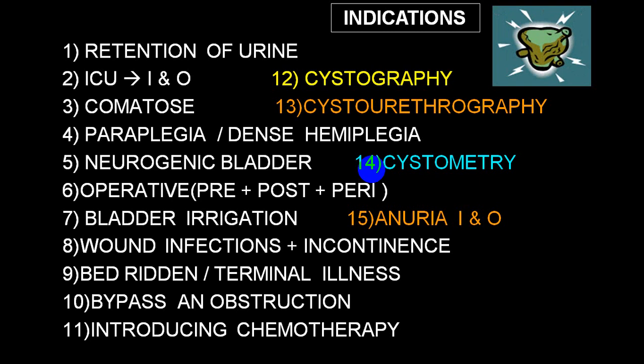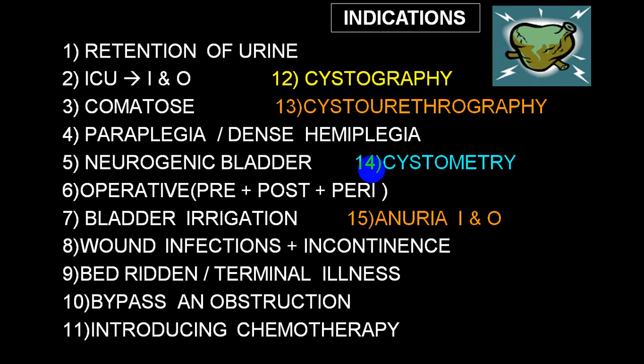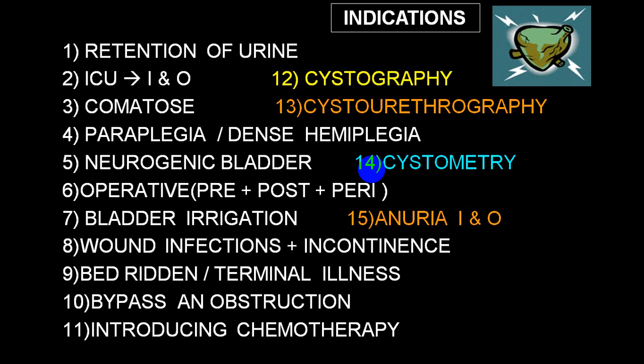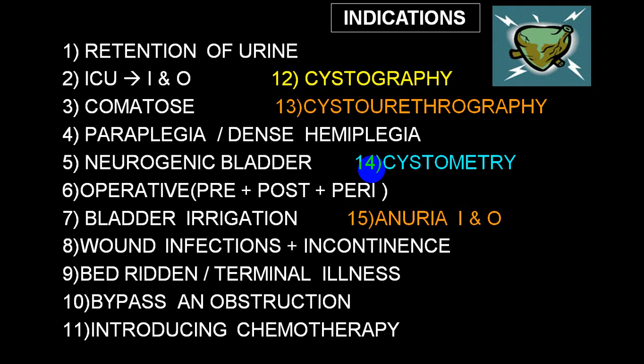Catheterization can also be done during the operative period — preoperative, perioperative, or postoperative. In conditions requiring bladder irrigation, particularly after prostate surgery, bladder biopsy, or chemotherapy, a three-lumen catheter is used. In cases of wound infection, incontinence, or absolutely bedridden or terminally ill patients, catheterization is frequently done to avoid complications from inability to pass urine.